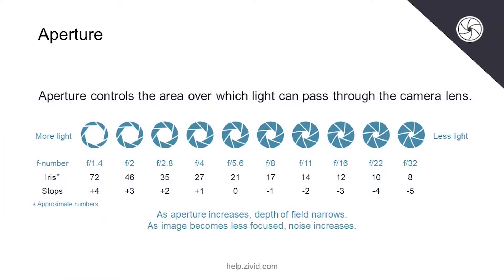A camera's aperture setting controls the area over which light can pass through the camera lens. It is specified in terms of an F number, which can at times be counterintuitive since the area of the opening increases as the F number decreases.